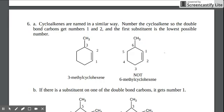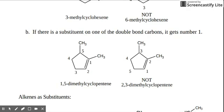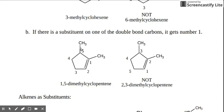Now, if there is a substituent on one of the double bond carbons, it gets number one. For example, if you have a CH3 on one of the double bond carbons, that carbon will get number one. So that carbon with the branch that also has the double bond should always get the number one spot, even if the other substituent will get a higher number. This is the correct way of numbering — this carbon will get number one.